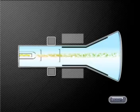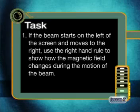Now here's your task for today. This diagram shows the electron beam passing between the two horizontal controlling electromagnets. If the beam starts on the left of the screen and moves to the right, use the right hand rule to show how the magnetic field changes during the motion of the beam. In your answer you will need to draw a series of diagrams to illustrate what happens.